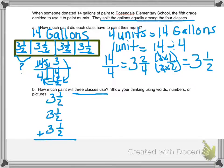Now this is a really nice addition problem because the denominator is already the same. So I don't have to find a common denominator. I can just add. So I'm going to add my whole numbers. Three plus three plus three gives me nine. My numerator is one plus one plus one gives me three. And my denominator stays the same. So I have nine and three halves.